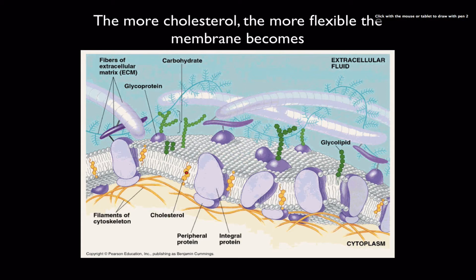Cholesterol — you've probably heard of it as an ingredient in food to keep to a minimum. It is a critical molecule; the problem is that people sometimes eat too much high-cholesterol food and their blood cholesterol levels get too high. But cholesterol is an absolutely necessary steroid — a type of lipid that gets built into the bilayer of the cell membrane. The more cholesterol a cell builds into its bilayer, the more flexible that cell membrane becomes.